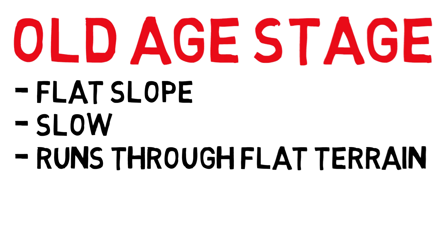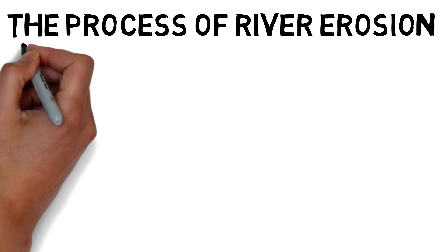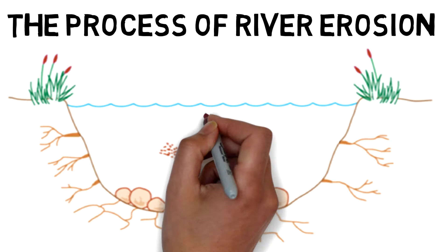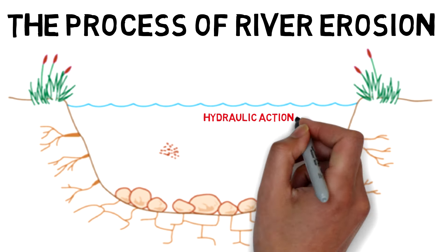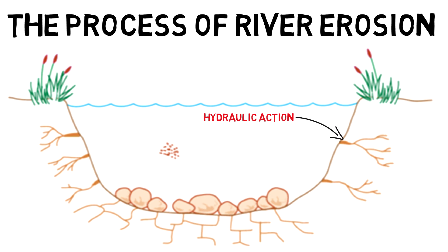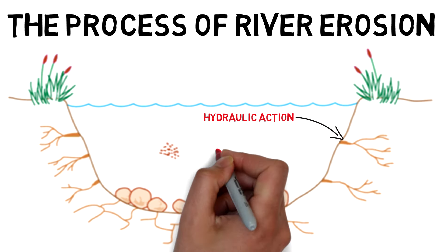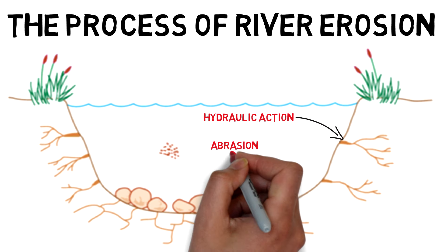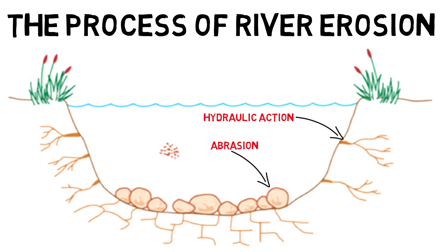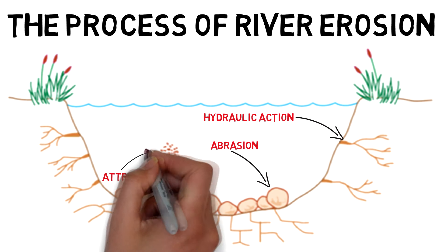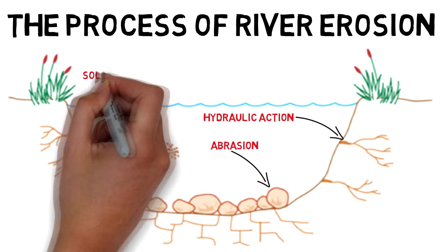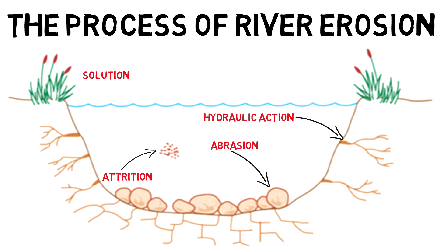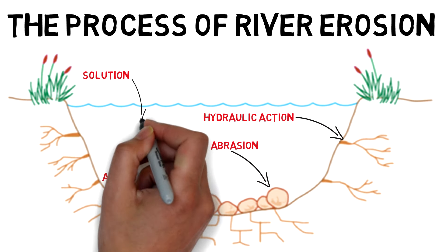Now we're going to move on to the processes of erosion that occur on rivers. First, we have hydraulic action — this is the force of moving water eroding the riverbed and riverbanks. The faster the water, the greater the force, and the more erosion there'll be. Then we have abrasion, where rocks and stones carried by the river, known as its load, are dragged and scraped along the floor of the river, making it deeper. Next, we have attrition, where the river's load collides and breaks down into smaller pieces. And finally, we have solution, where chemicals in the river actually dissolve the rock on the riverbed.